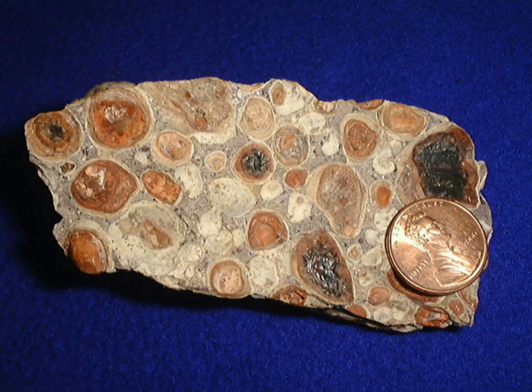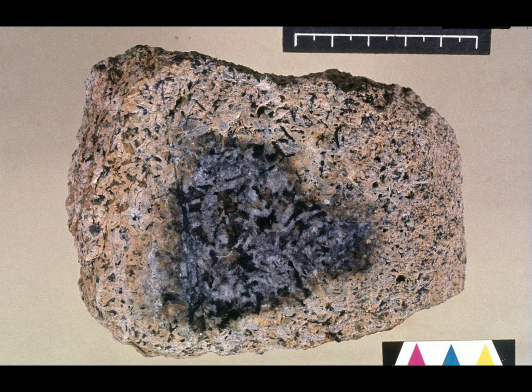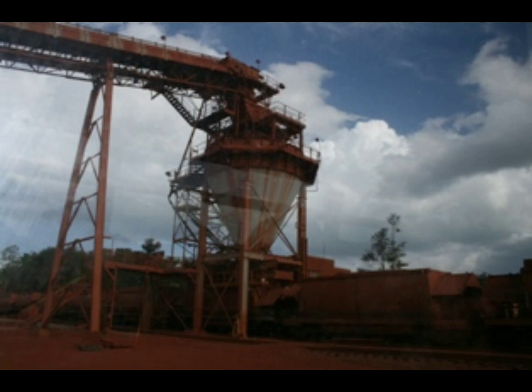As a bulk cargo, Bauxite is a group A cargo that may liquefy if excessively moist. Liquefaction and the free surface effect can cause the cargo to shift rapidly inside the hold and make the ship unstable, potentially sinking the ship.